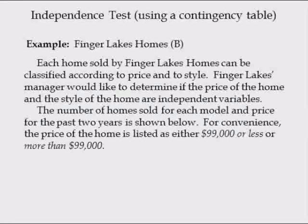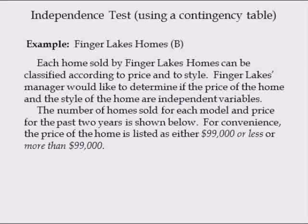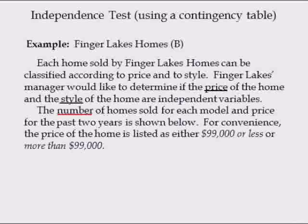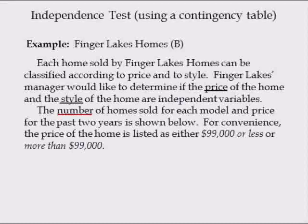In the following example, each home sold by Finger Lakes Homes can be classified according to price and style. The Finger Lakes Manager would like to determine if the price of the home and the style of the home are independent variables. The price of the home is listed as either $99,000 or less, or more than $99,000.